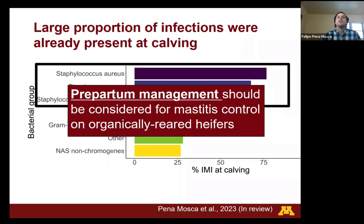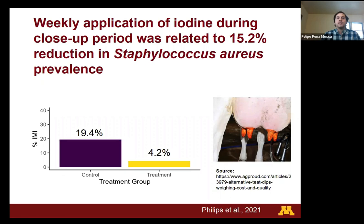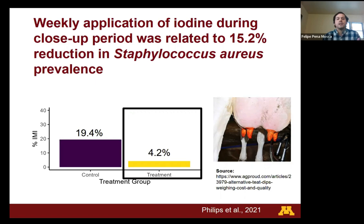This suggests that prepartum management should be considered for mastitis control in organically reared heifers. I found a study performed by Bradley Haynes, also involving our project, in which heifers were randomly assigned to a control group or a treatment group where a 1% iodine solution was applied to teats weekly during the close-up period. They found that treated cows had a 15% lower prevalence of Staph aureus at calving, and the heifers also became more accustomed to the milking parlor and were less likely to kick. I believe this is something that should be considered for management.